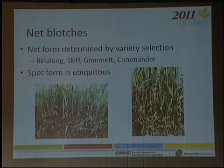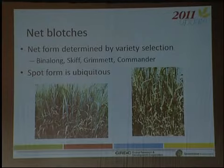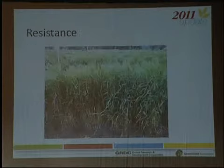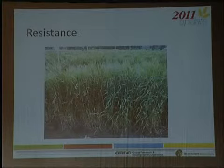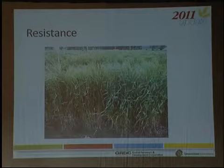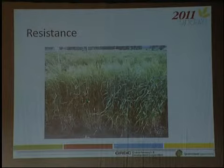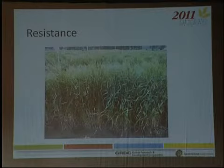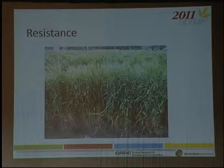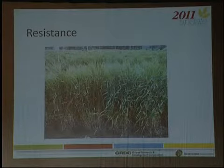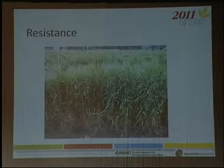For spot form net blotch we don't have a lot of resistance to throw at it commercially, but I want to show how good we can be. This is from a double haploid population we're doing a lot of work with back at Hermitage — a cross between a North Dakotan line and one of our breeding lines out of the Queensland program. Those are the sorts of resistance levels we can achieve with genetics, but unfortunately not yet in commercial varieties.